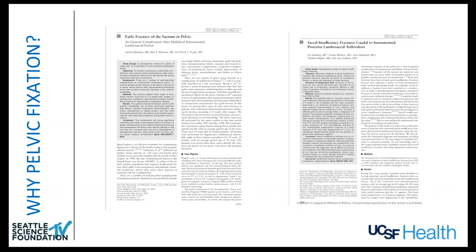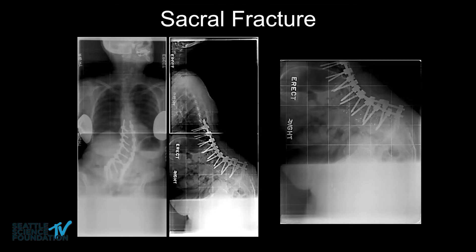Why did pelvic fixation start? When you look at the literature in the early and mid 2000s, case reports and case series came out talking about early fractures of the sacrum and pelvis following longer constructs. As we moved into performing more adult degenerative scoliosis procedures and longer constructs, we started getting these complications. Here's an example: a patient with a long construct where the lateral views show the S1 screws have pulled out, and the sagittal imbalance is a direct cause of the sacral fracture. To fix this, I ended up having to do a sacral osteotomy — not an easy fix.